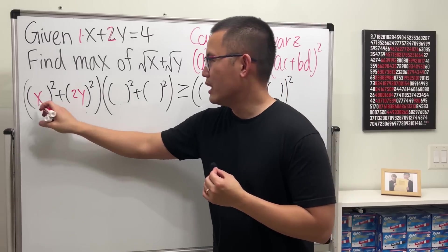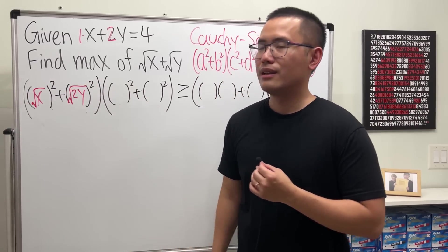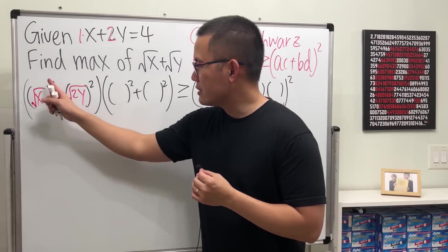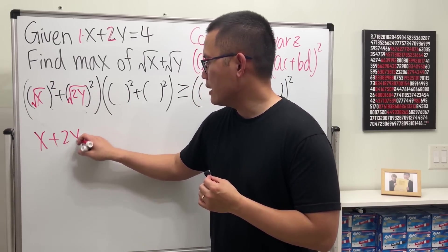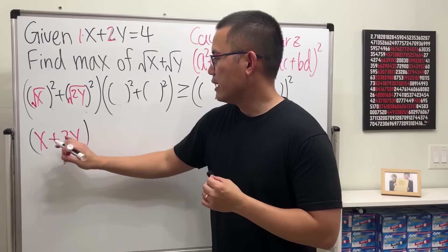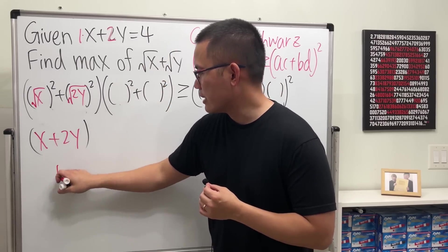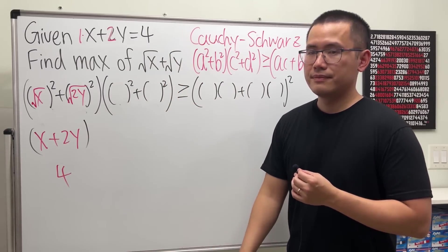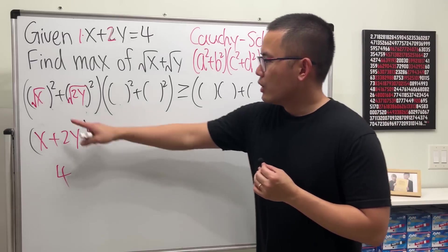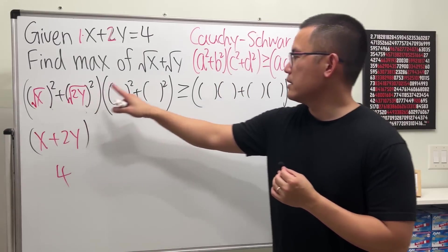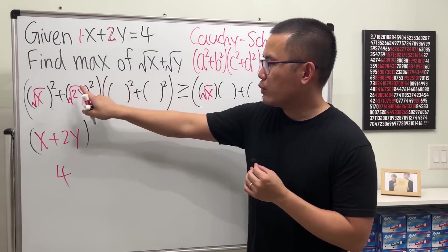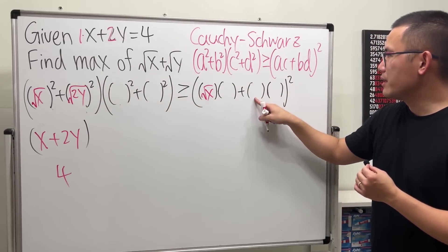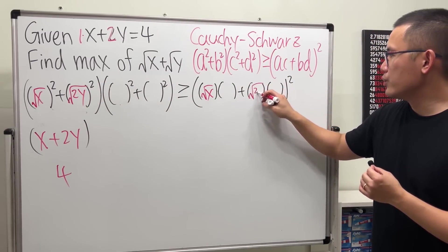How's that? Still works, right? Because this will give us just x and then plus 2y in the first parenthesis. And that will reduce to just the number 4, thanks to that. Okay. I put down this right here. That means I will have to fill in square root of x here. Likewise, this will be right here. Square root of 2y.